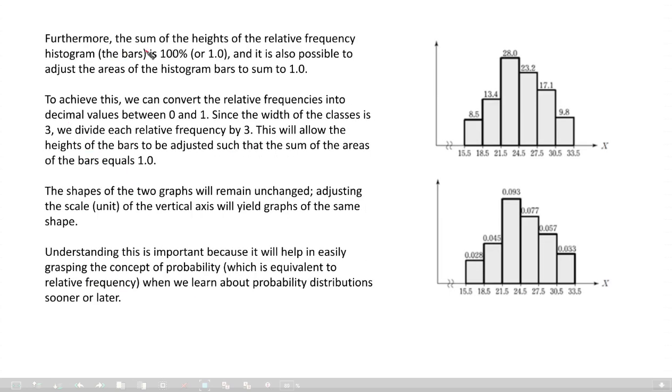Furthermore, the sum of heights of the relative frequency histogram, the bars, is 100%. This one is probability. Relative frequency means probability. And we can use decimal values instead of percent. Then it is going to be 0.085, 0.134, 0.280, something like this. Then the sum of these bars will be 1.0. It is also possible to adjust areas of histogram bars to sum to 1.0.